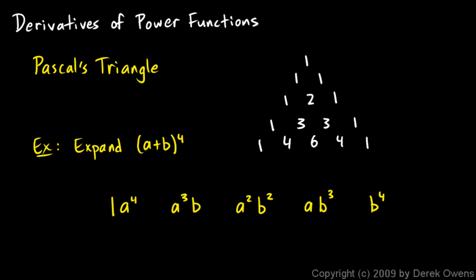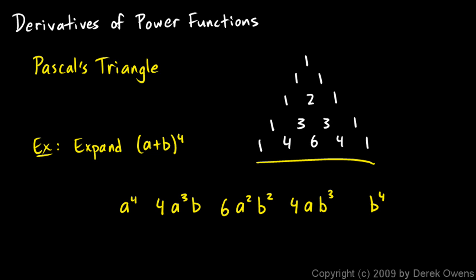So: 1·a to the 4th — you don't even have to write the 1 — then 4a³b, and 6a²b², and 4ab³, and then b to the 4th. Those coefficients — 1, 4, 6, 4, 1 — came from that appropriate row of Pascal's triangle. And then you add these terms up. So a plus b to the 4th equals a⁴ + 4a³b + 6a²b² + 4ab³ + b⁴.